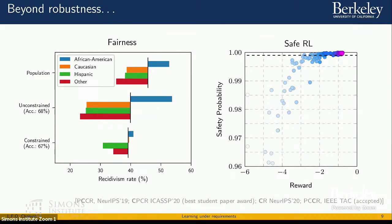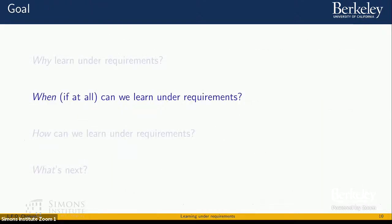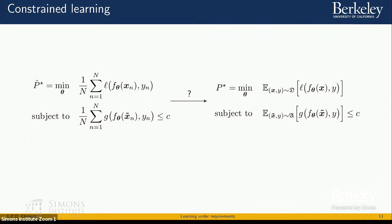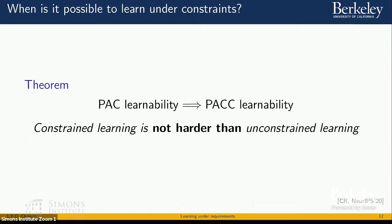Now, obviously, this effectiveness raises some theoretical questions in terms of learning: when is it possible for us to actually learn under requirements? In other words, when is it that the solution of that empirical problem actually generalizes in practice? And it's a simple exercise in a union bound to show that if you can learn those separate losses, if you can solve those learning problems separately, you can solve them jointly. So in a certain sense, in a learning theoretic sense, constraint learning is not really that different or much harder than unconstrained learning.